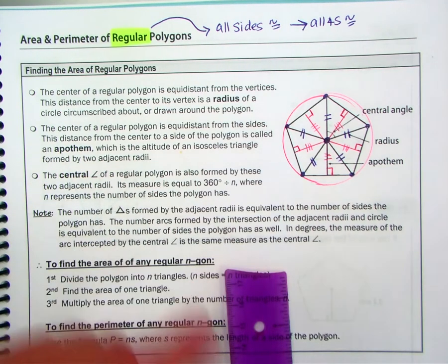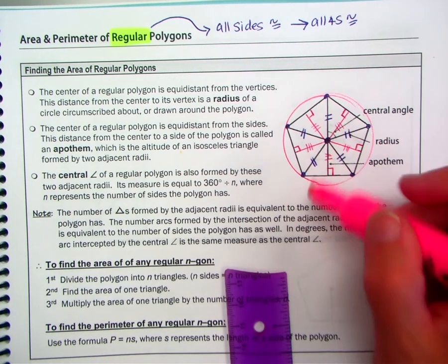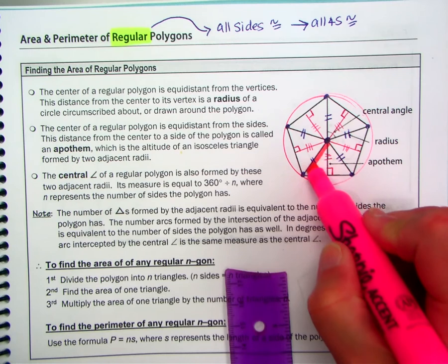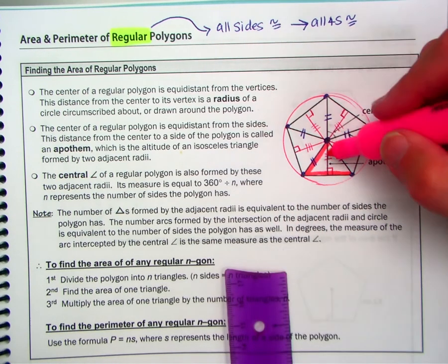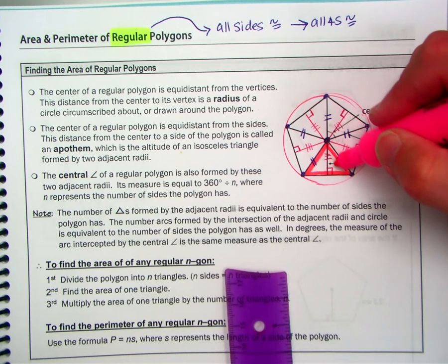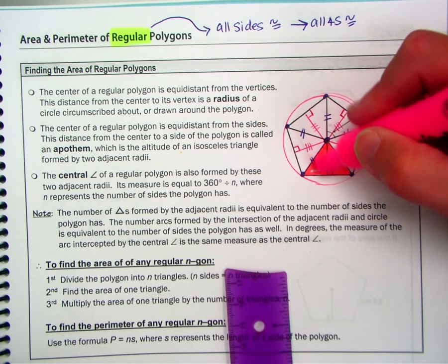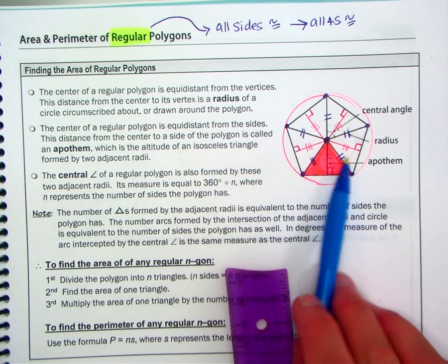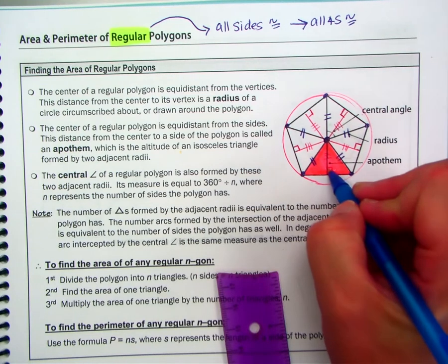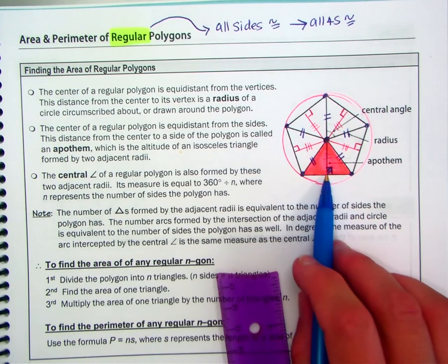Which is also the altitude of an isosceles triangle. So if we look at one of these triangles within our figure, so I'm just going to highlight one. Now it's a pentagon. Five sides, so there should be five triangles within the pentagon. So if I'm looking at this one triangle, one of the five, it is isosceles. And this apothem is also the height of that triangle.